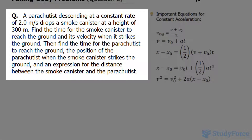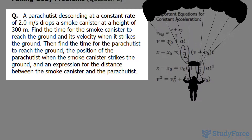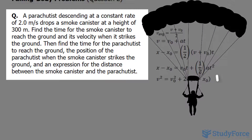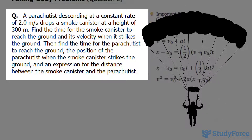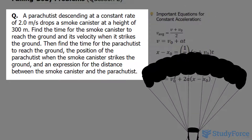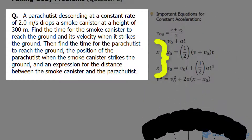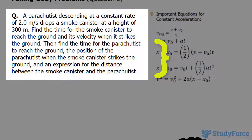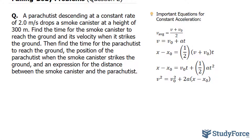The question reads: a parachutist descending at a constant rate of 2.0 meters per second drops a smoke canister at a height of 300 meters. Find the time for the smoke canister to reach the ground and its velocity when it strikes the ground. Then find the time for the parachutist to reach the ground, the position of the parachutist when the smoke canister strikes the ground, and an expression for the distance between the smoke canister and the parachutist.